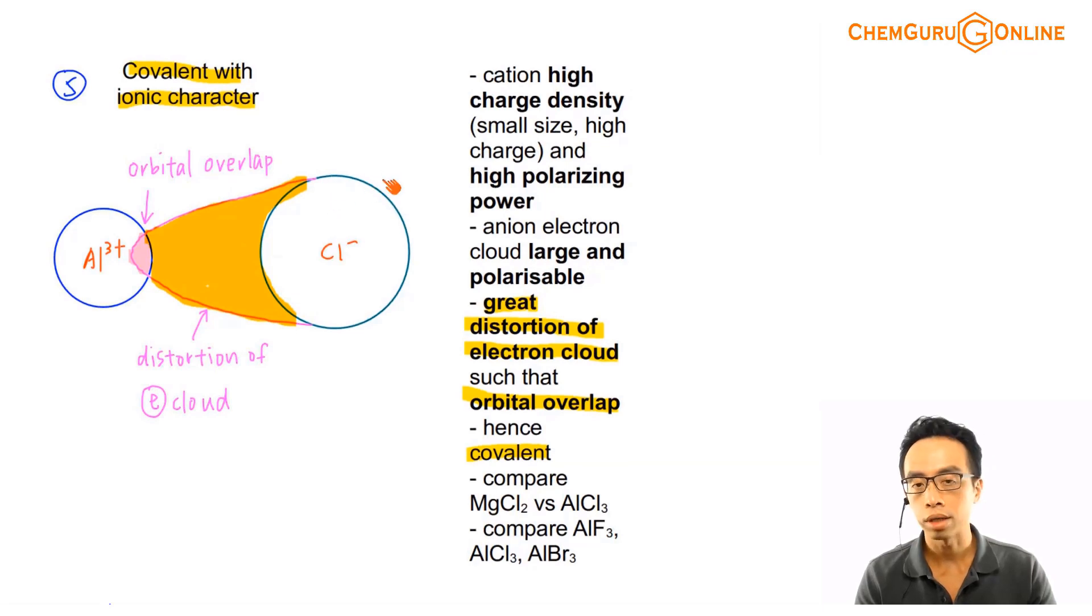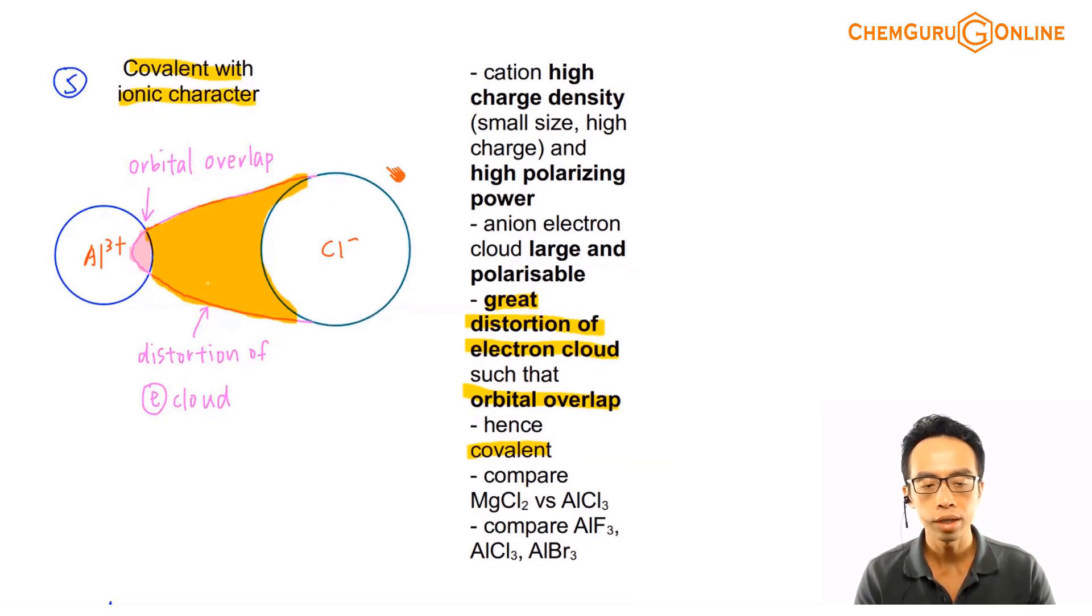Now involving aluminum chloride, again this is a classic, so therefore we have to memorize it. We say that Al3+ has a very high charge density, in fact much higher than Mg2+, so it has an even greater polarizing power.